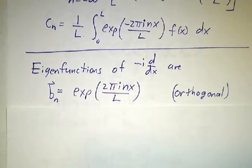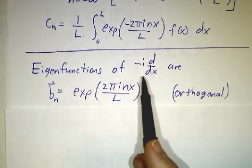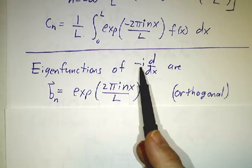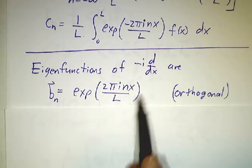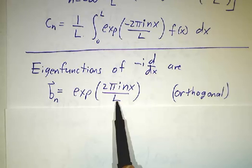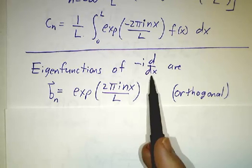The reason is we're using eigenfunctions not of the second derivative, but of the first derivative, minus i d/dx. These give you a nice orthogonal basis, because minus i d/dx is Hermitian.